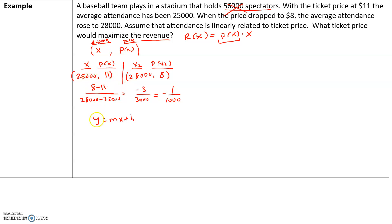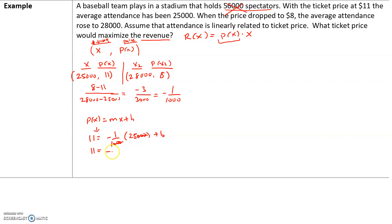Plugging in slope and the first point: P(x) = 11, slope = −1/1,000, x = 25,000, plus B. Dividing gives 11 = −25 + B. Adding 25 to both sides gives B = 36.